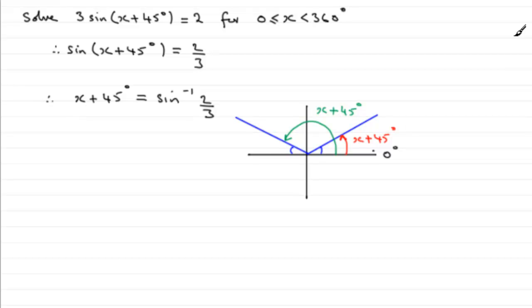So what we need to do now is just inverse sine the 2/3. So x + 45° equals the inverse sine of 2/3. Make sure your calculator is in degrees mode, very easy to forget that you're in radians mode maybe from an earlier calculation. If you do the inverse sine of 2/3 you find that you get 41.810 and so on degrees.